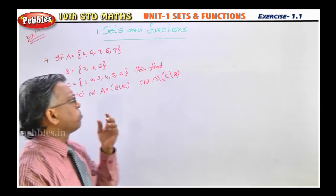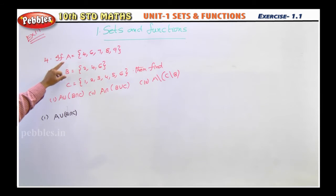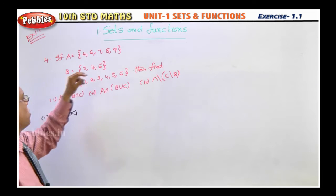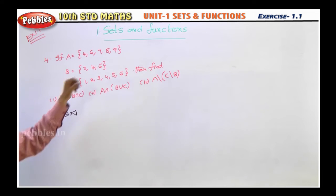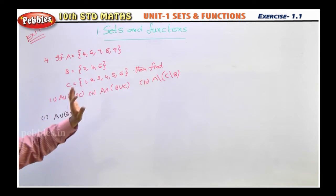Now listen, this is a very easy problem. Nothing difficult here. If A is equal to 4, 6, 7, 8, 9, B is equal to set containing 2, 4, 6, C is equal to set containing 1, 2, 3, 4, 5.